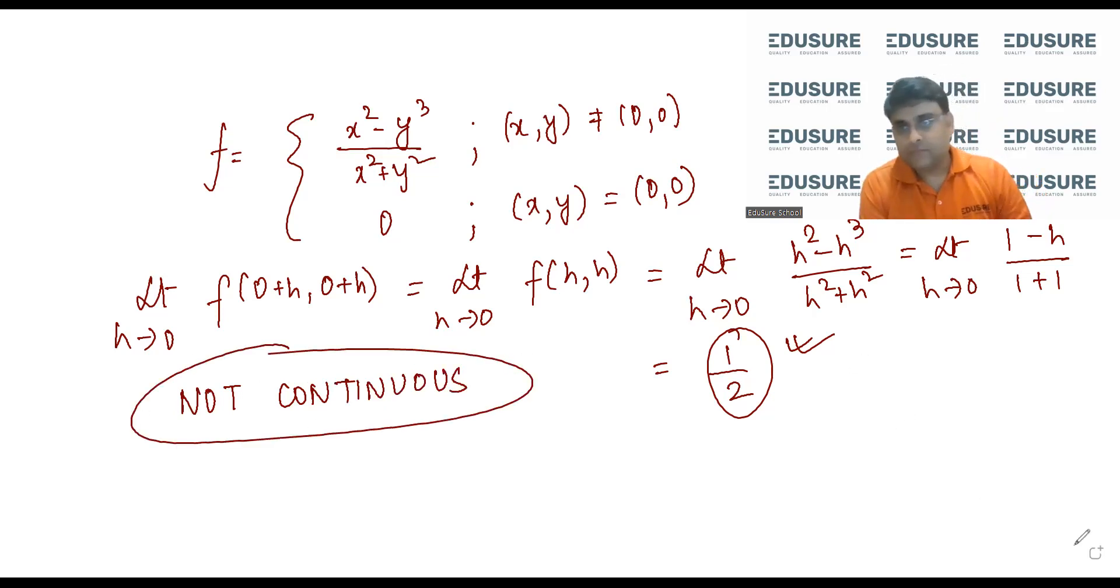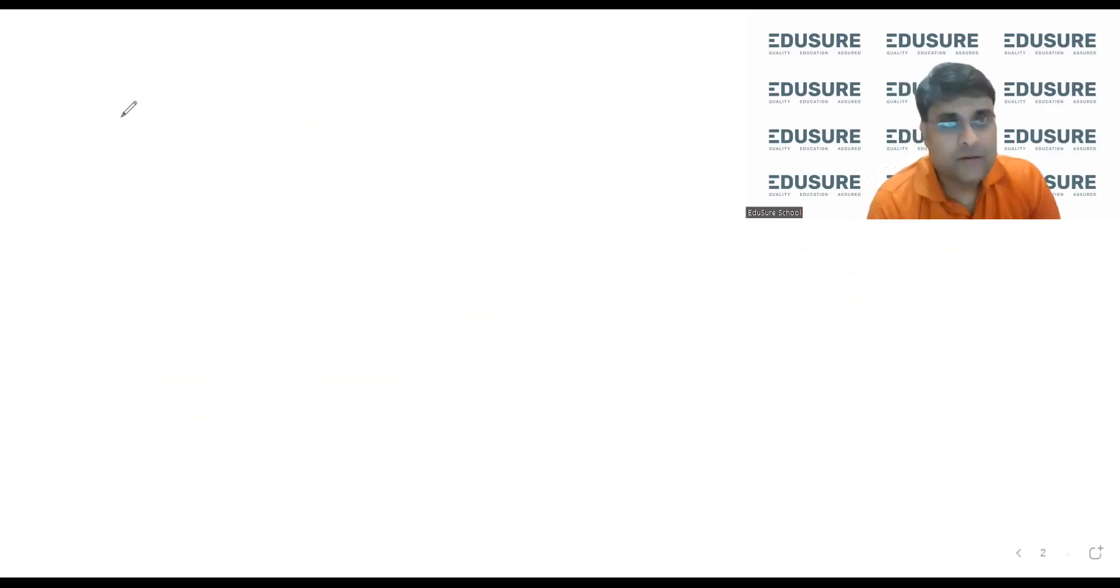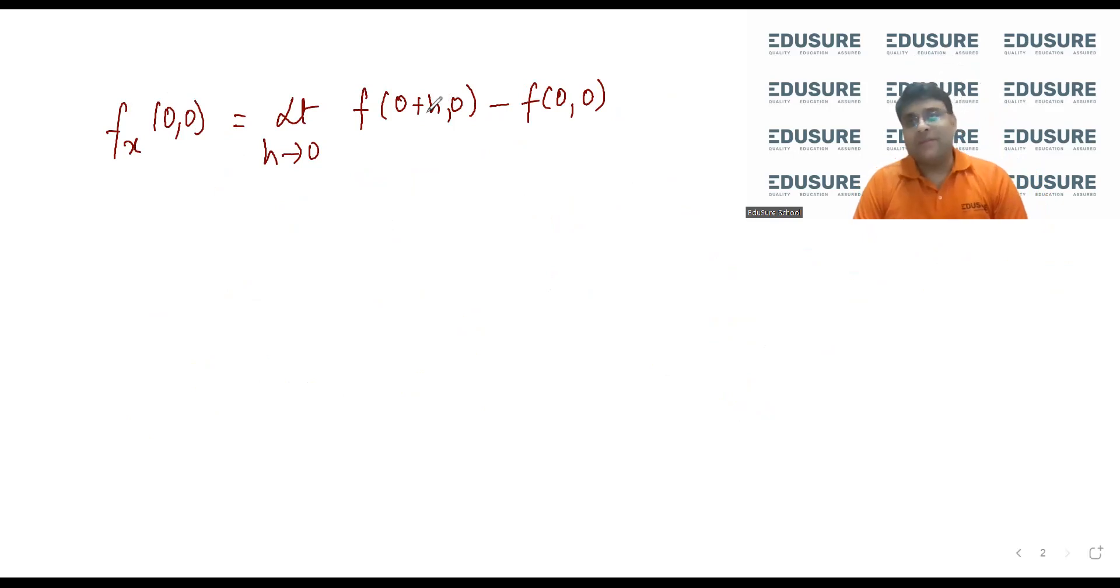Now we need to find fx at (0,0). fx at (0,0) is nothing but limit h tends to 0, I am only changing for x. This type of question has appeared in DSC multiple times - DSC 2019, DSC 2015, DSC 2018. So this is what my right hand derivative at x is. First let's find out whether the partial derivative exists or not.